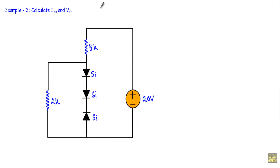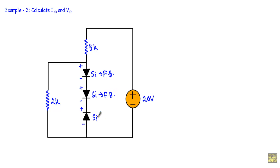This is my third example of a diode series circuit. I need to calculate the current through and voltage across a 2kΩ resistor. The positive terminal connects to the P side of two silicon diodes but to the N side of a third silicon diode. This means the 20V source drives two diodes in forward bias but one diode in reverse bias, so I replace that reverse-biased diode with an open circuit.